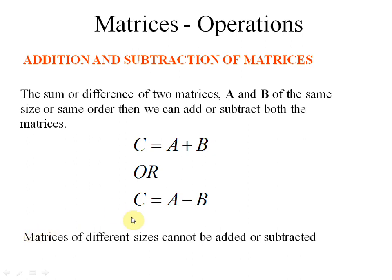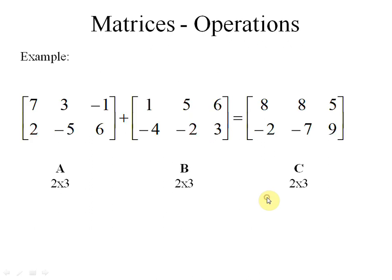If matrix A has seven elements and matrix B has nine elements, we cannot add or subtract them. Moving on to examples: if matrix A has order 2×3 and matrix B has order 2×3 — the same — then we can add them.